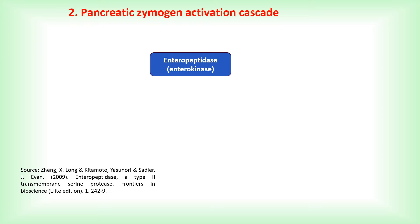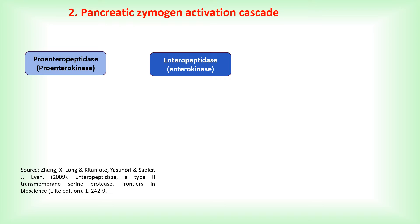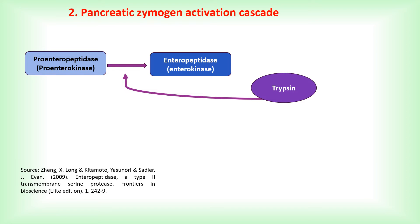Enteropeptidase, or enterokinase, is a type 2 transmembrane serine protease localized to the brush border of the duodenal and jejunal mucosa. It is synthesized as a zymogen — proenteropeptidase — that requires activation by another protease, either trypsin or possibly duodenase.